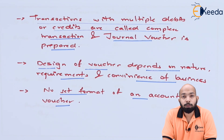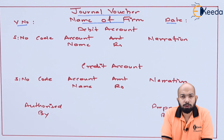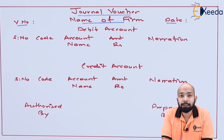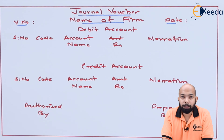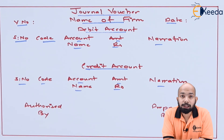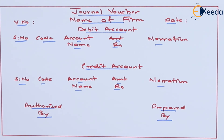For a journal voucher, it includes both debit account and credit account together — it is a merger of both. On the left is the voucher number, in the middle is the name of the firm, and on the right is the date. Again there are five columns for each: serial number, code, account name, amount, and narration — both for the debit account and the credit account. After that, the same authorized by and prepared by columns apply. These are the simple formats of vouchers we deal with, both internal and external.